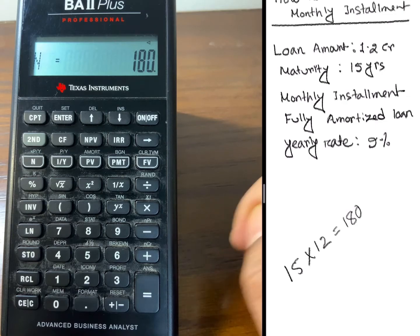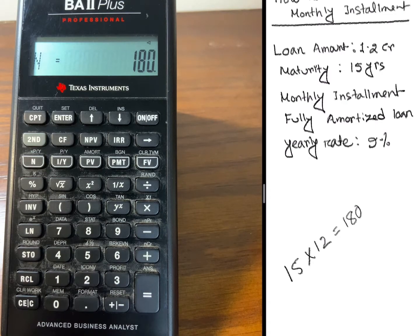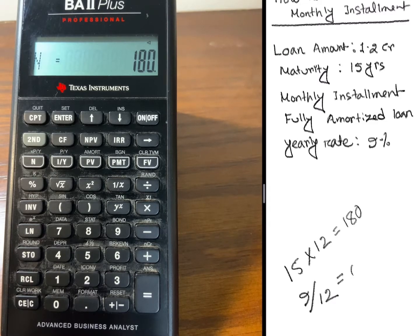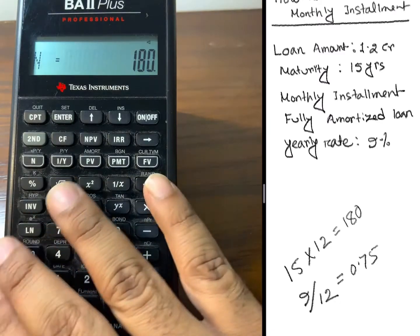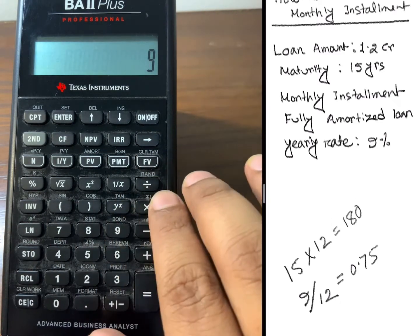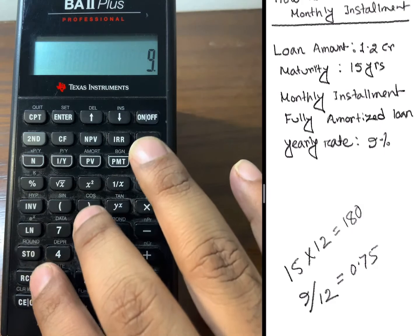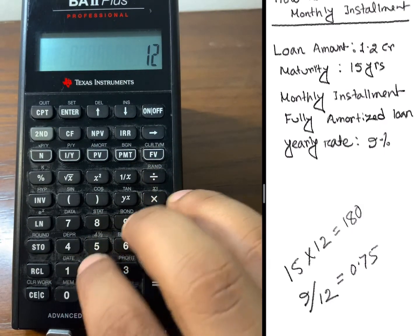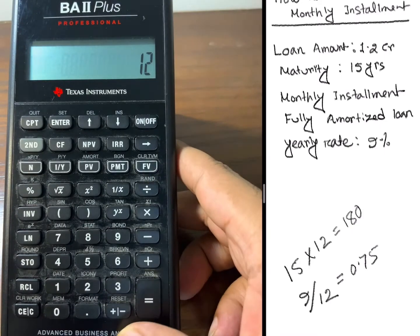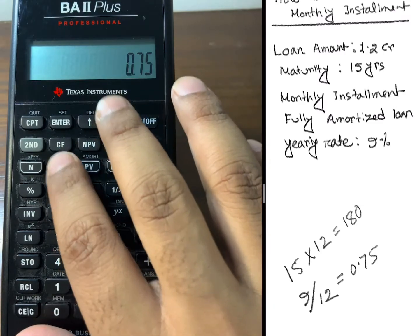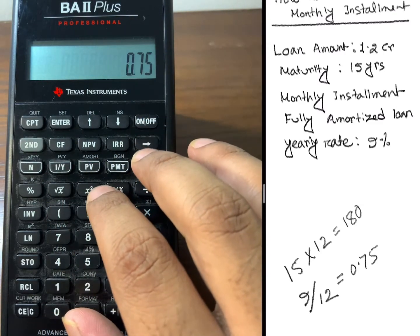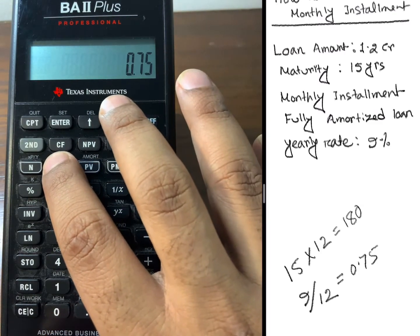Then the yearly rate is 9%. 9% means 9, but the monthly rate will be 9 divided by 12, which is 0.75. So what I'll do is type 9 divided by 12 and then equal. When in the display I can see 0.75, I'll press I by Y.